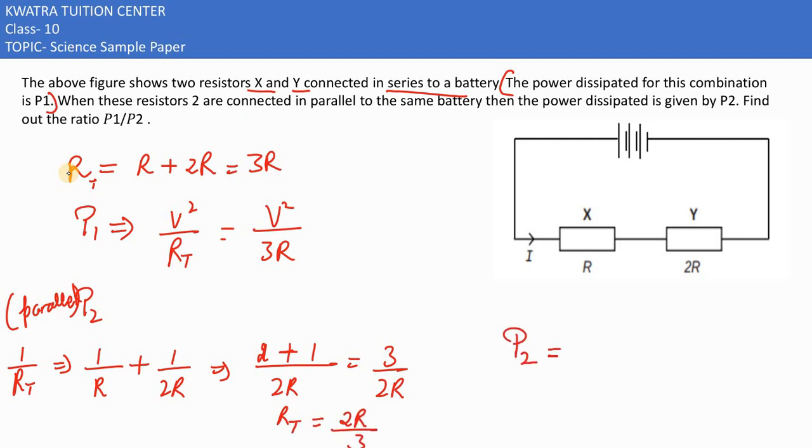This is V². Total resistance in parallel case is 2R by 3, and the power would be 3V² over 2R.